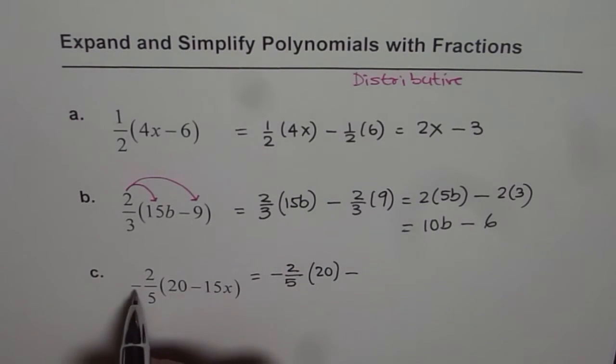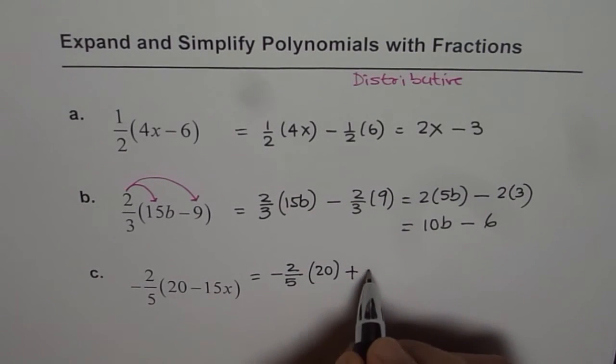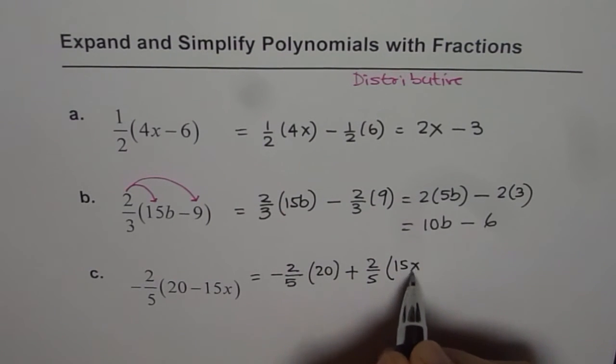When you do minus with minus, it becomes plus. So we have plus 2 over 5 times 15x.